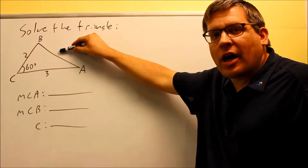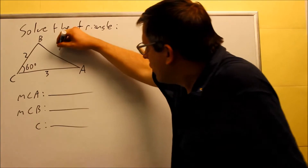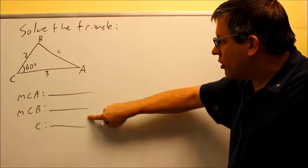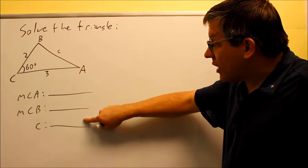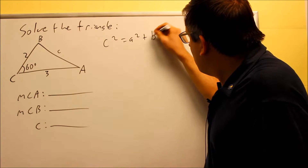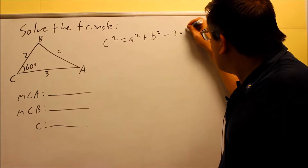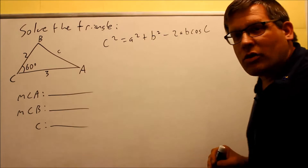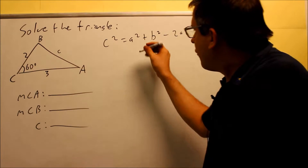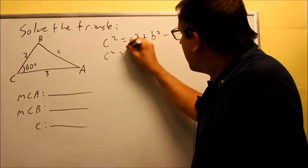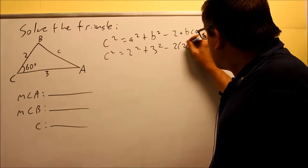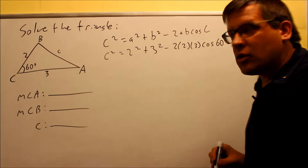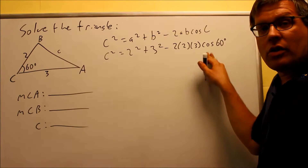We have three different forms of the law of cosines, and we're going to pick the one that allows us to solve for this missing side. If we can find this side, we can use the law of sines to finish the rest of the problem. This side is going to be lowercase c, so we want the form that solves for c: c squared equals a squared plus b squared minus 2ab cosine C. The angle C is 60 degrees, a is 2, and b is 3.